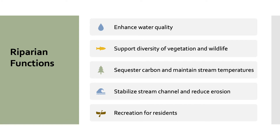Why should we care about riparian ecosystems? Riparian areas provide several ecosystem services essential for aquatic, terrestrial, and human communities. These services include enhancing water quality by removing pollutants from entering streams, which is vital to drinking water supplies and local wildlife. Riparian areas also support diverse vegetation species, providing habitat for aquatic and terrestrial wildlife. Riparian vegetation sequesters carbon and provides shade to adjacent streams, which maintains stream temperatures. Additionally, riparian vegetation stabilizes stream banks and reduces excessive sediment input into streams. Finally, riparian ecosystems provide recreational activities such as fishing, boating, and wildlife viewing.